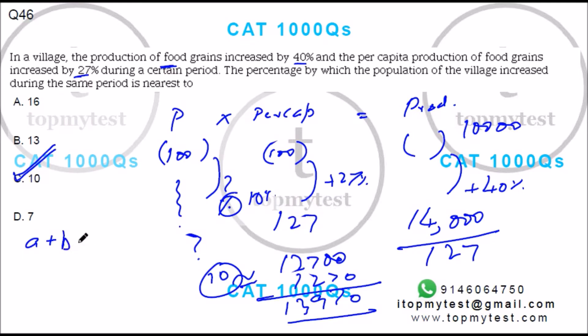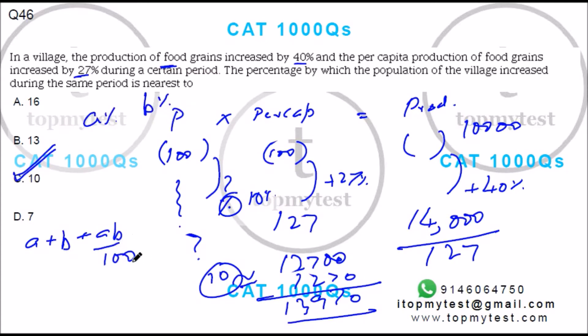You can also do it using the relationship: a + b + ab/100. If one value changes by a percent and another changes by b percent, the overall change will be a + b + ab/100 percent.